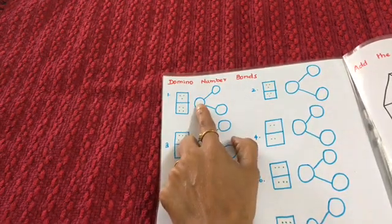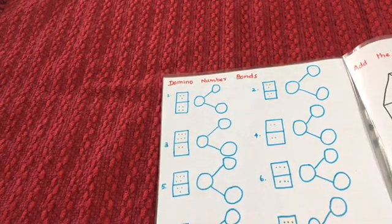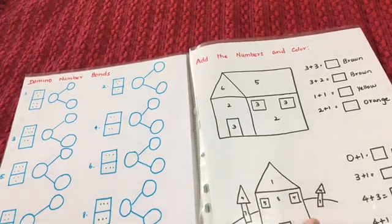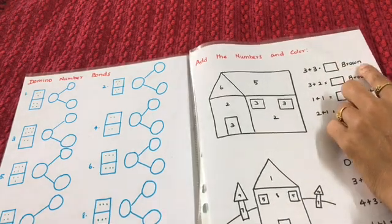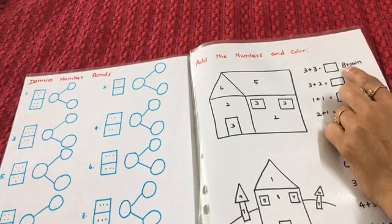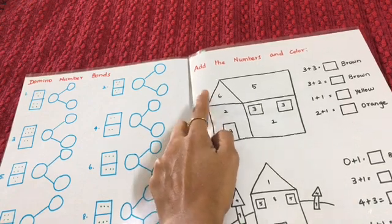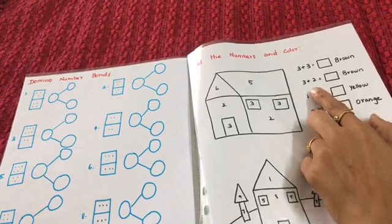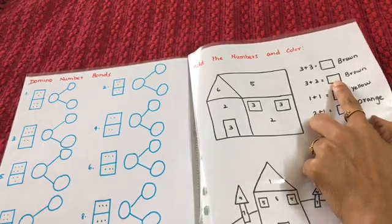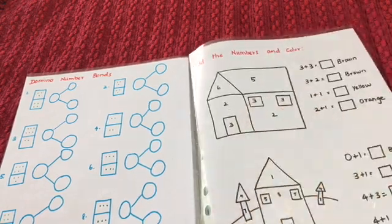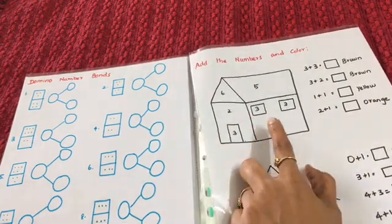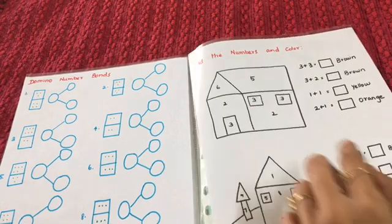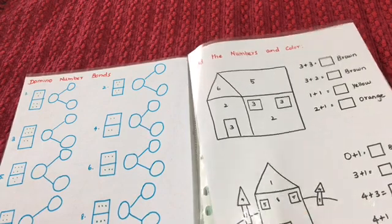Here he adds the numbers and then colors by the answer. For 3 plus 3 equals 6, he reads the color for number 6 — it's brown — and colors all number 6 spaces brown. For 3 plus 2 equals 5, he colors number 5 brown. For 1 plus 1 equals 2, he colors number 2 yellow wherever he sees it.